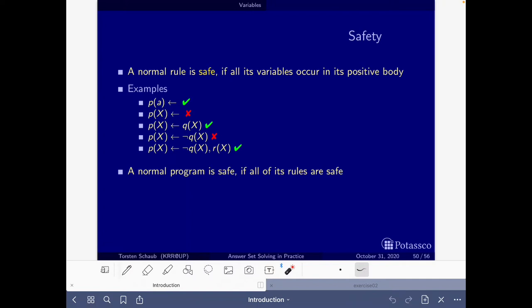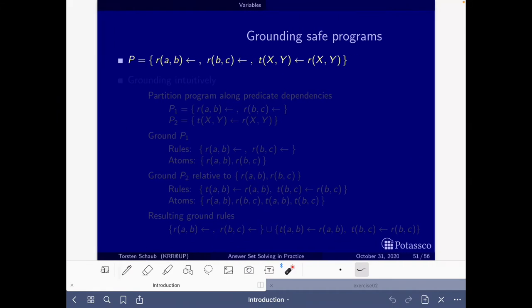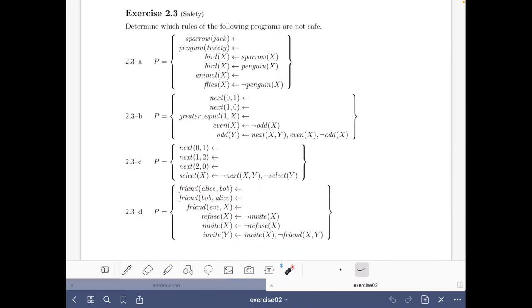All we have to see is if the variables occur in the positive body of the rules. I will just cross the ones that are not safe. The first rule is safe because there are no variables, same for the second one—facts are always safe.